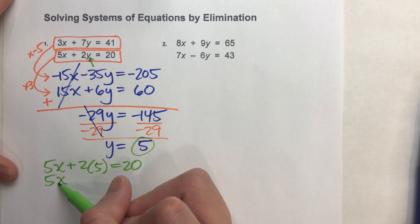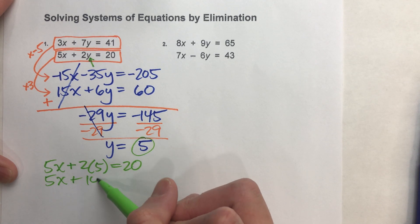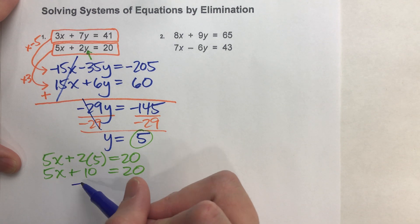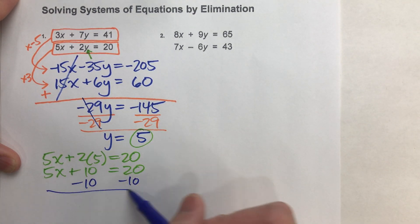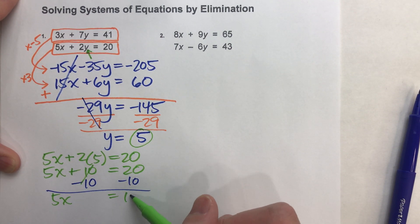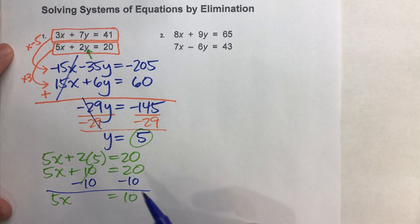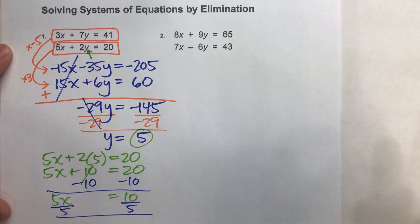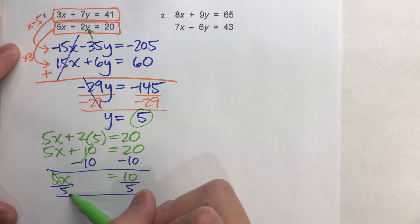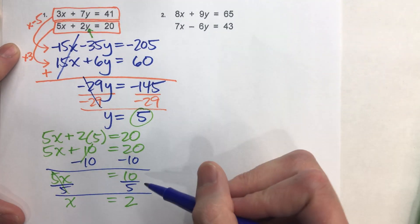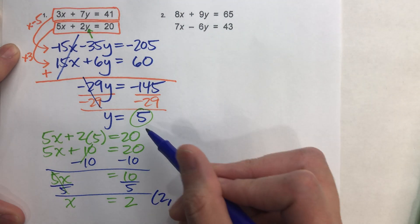And simplifying this a bit, 2 times 5 is 10. So if I solve this equation, I can get x. So let's subtract 10 on both sides. I end up getting 5x equals 10. And divide both sides by 5. I end up getting x equals 2. So I just found my solution. x is 2, y is 5.